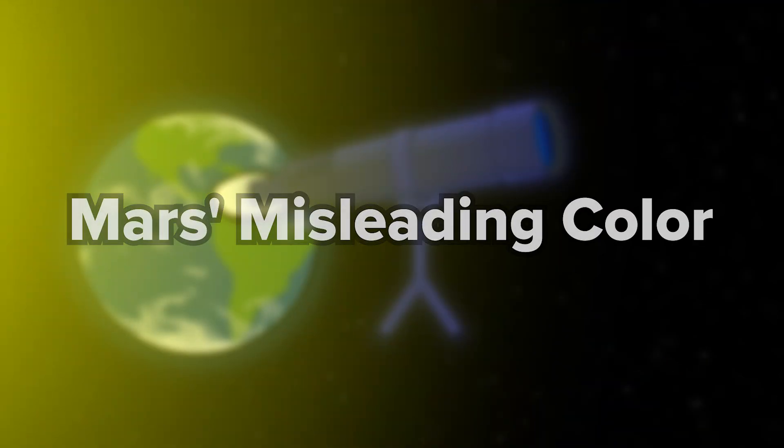Early telescopic observations gave Mars a reddish appearance, but later explorations revealed its true color to be more butterscotch or ochre.